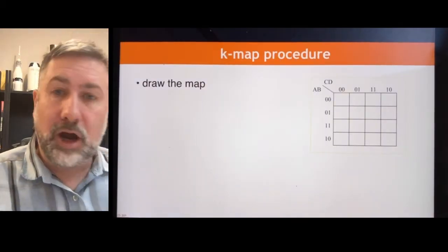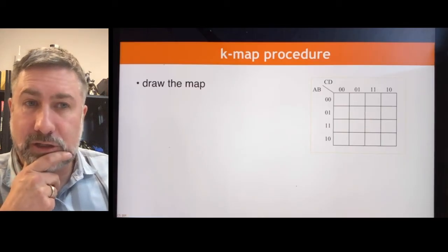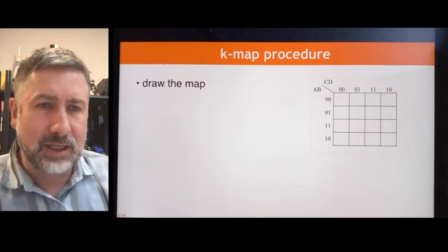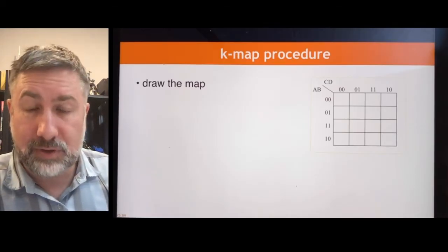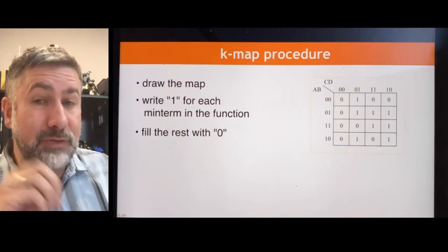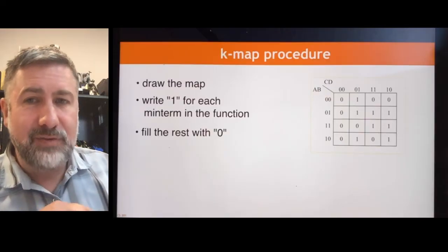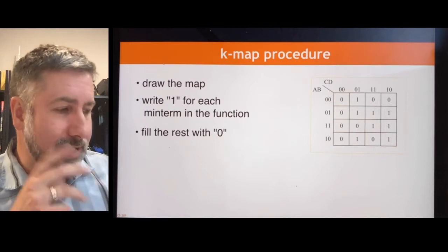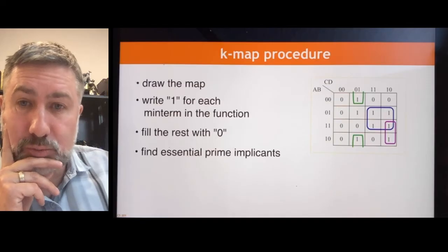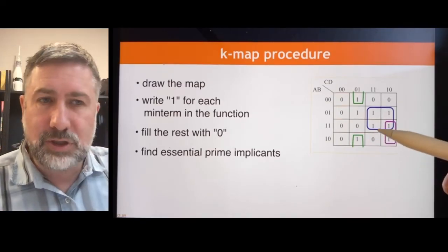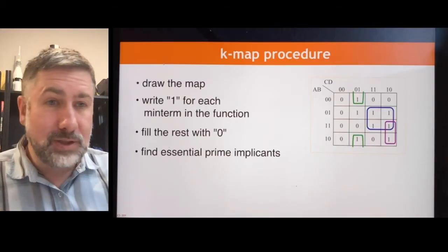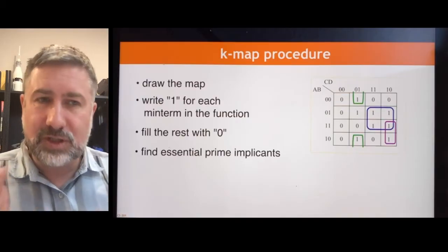Let's look at the complete procedure for doing a Karnaugh map. First, you're going to draw out the map — there's a template in Excel you can use, or a drawing program, or by hand. Then you're going to put a one for each minterm in the function and fill the rest with zeros — if we leave it blank, we assume it's zero. Then you're going to identify all of the essential prime implicants by looking through every term and finding the biggest groupings, covering most of the ones with essential prime implicants.